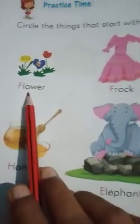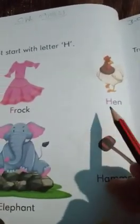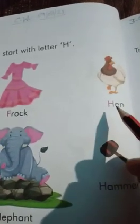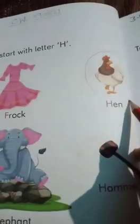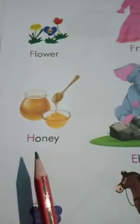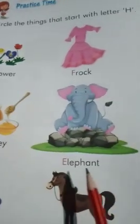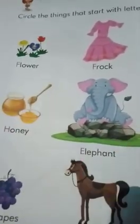This is a flower, this is a frog, and this is a hen — who is starting with H? I will circle the hen. This is honey, this is an elephant, and this is a hummingbird. So we have two circles: honey and hummingbird.